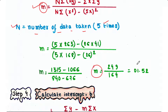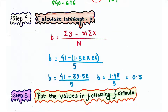Step 4 is to calculate the intercept, that is b. This is the formula to calculate b. If we put the values in, we will get b is equal to 0.3.